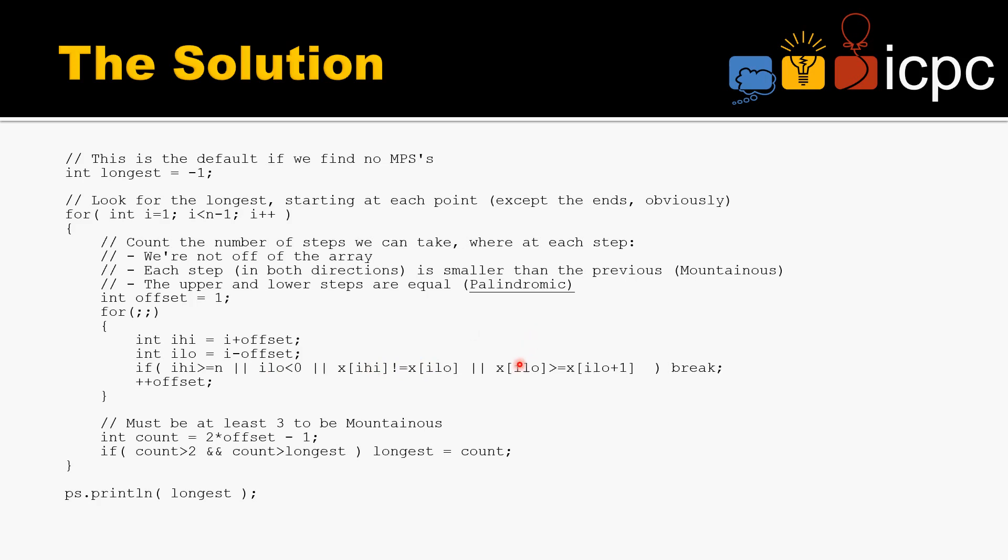...or if the lower one is greater than or equal to the next one up (which means that it's not mountainous, it's not the right slope), we're going to break. You'll notice we break on failure, so offset is going to be one greater than the actual offset that forms the mountainous palindromic subarray.